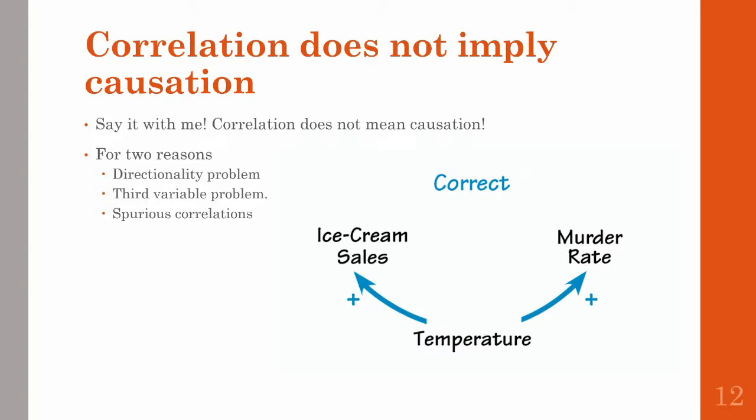It actually has to do with temperature. Temperature is related to both of these — in warmer weather, more ice cream is being sold, and in hot weather, people are more likely to commit murder. So both of these things move together, creating this artificial relationship between ice cream and murder.